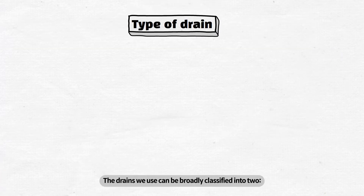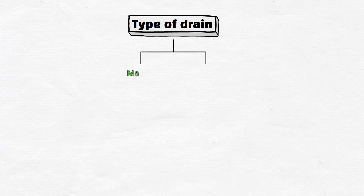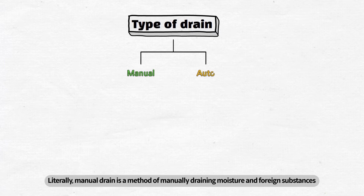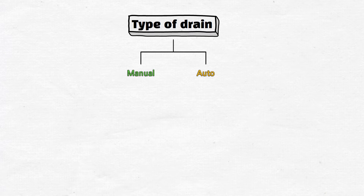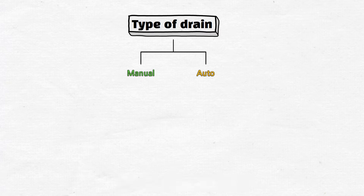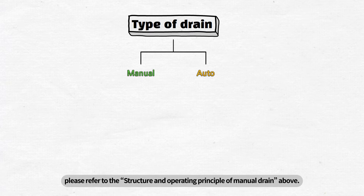The drains we use can be broadly classified into two: manual and automatic. Manual drain is a method of manually draining moisture and foreign substances, while the automatic drain is done vice versa. Today, we will learn about the auto drain. If you want to know about the manual drain, please refer to the structure and operating principle of manual drain.